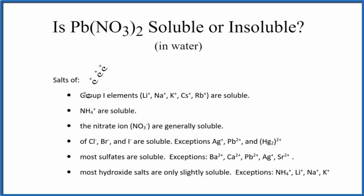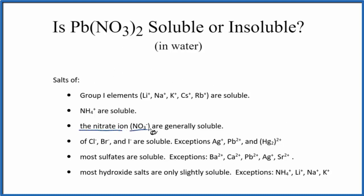Here's a brief set of the solubility rules — the really important ones. As we go down, we see that the nitrate ion, NO₃ minus, means that the compound is going to be soluble.